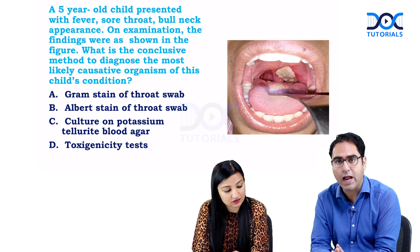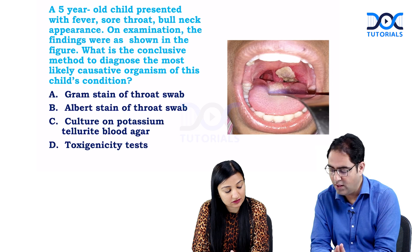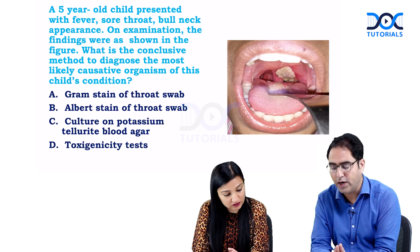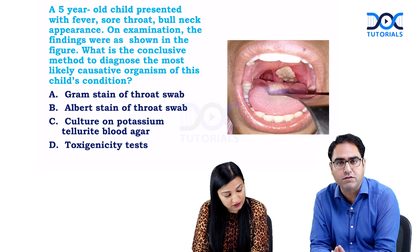The choices are: A — Gram stain of throat swab; B — Albert stain; C — culture on potassium telluride agar; or D — toxigenicity test.